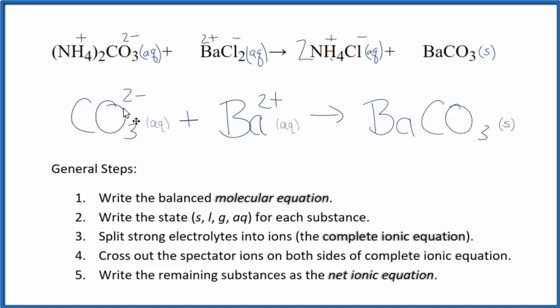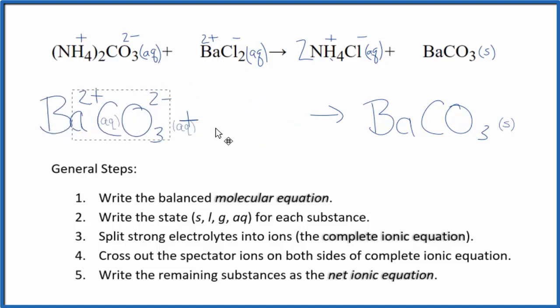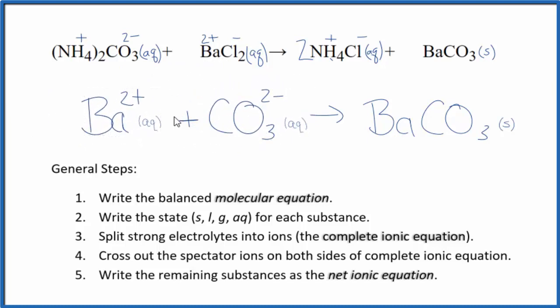You'll note the charge is balanced. I have a two minus and a two plus. They balance out net charge of zero. And this is a neutral compound net charge of zero over here. If you count the atoms up, they're balanced as well. You'll often see the positive ion written first. It really doesn't matter. It's the same equation. Maybe this looks a little bit nicer. But either way, this is the balanced net ionic equation for NH42CO3 plus BaCl2.